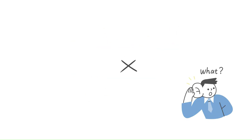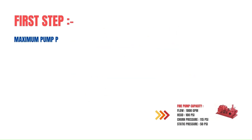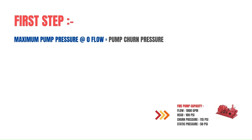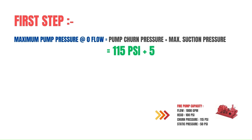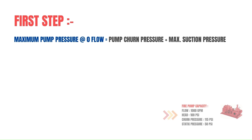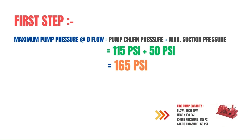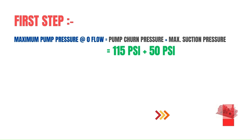The first step is knowing the maximum pump pressure at zero flow, or churn condition, which is calculated by adding the pump churn pressure with the maximum suction pressure. Using our data: 115 psi plus 50 psi gives us 165 psi. That completes the first step.